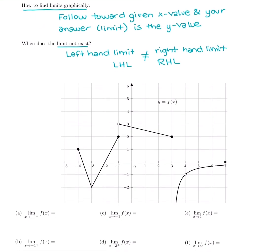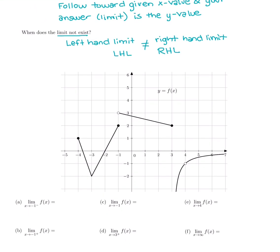Let's look at this graph. The first limit is as X goes to negative 1 with a negative after that number. The negative after the number tells us which side to come in on — the negative side of the number line is the left-hand side. So we're going to approach from the left-hand side. I want to approach negative 1 in the X value, and my answer is whatever Y value we get. Normally I'd just follow in with my fingers — wherever my finger leads me, that Y value is my answer.